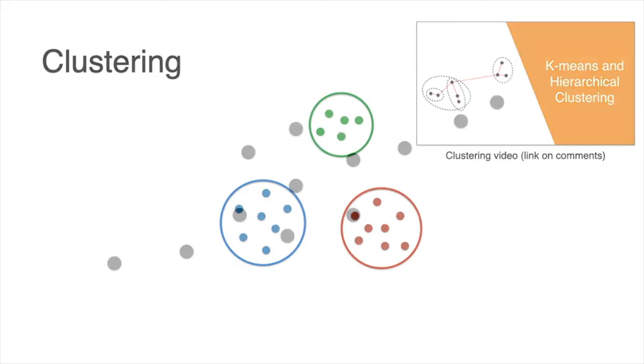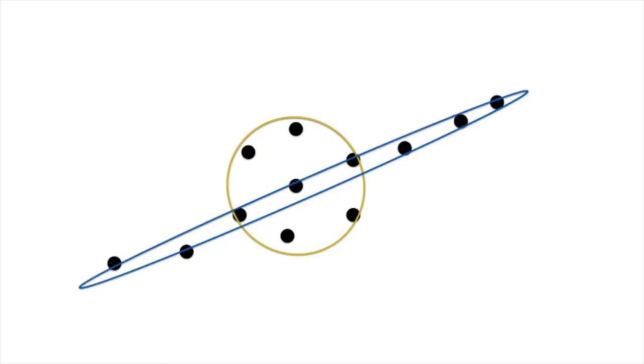However, sometimes datasets are more complicated, like this one. In this dataset, it looks like there are two clusters, this circle over here, and this line or elongated oval around here. And these clusters seem to intersect with each other, which makes the problem very difficult for traditional clustering algorithms. Therefore, we need something different.